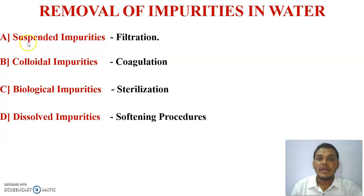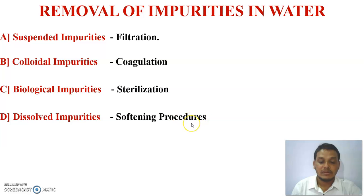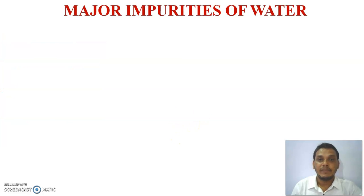In summary: suspended impurity is removed by filtration techniques; colloidal impurity by the coagulation method; biological impurity by the sterilization process; and dissolved impurity by the water softening process.